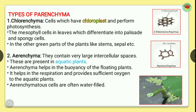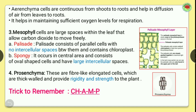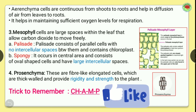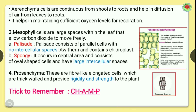In the cross section of a lotus stem, you can see small holes which are air cavities that hold air and help in buoyancy. Aerenchyma cells are continuous from shoots to roots and help in the diffusion of air from leaves to roots. Aerenchyma is present only in aquatic plants and helps maintain sufficient oxygen levels for respiration.